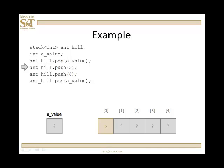Now let's push 5 onto the stack. So ant-hill.push5 puts 5 into the zeroth element of that array. I'm going to push 6. That puts 6 into the first element of the array and then I'm going to pop a value and what happens? 6 comes off and is placed into a value. Notice it is actually removed from the array.